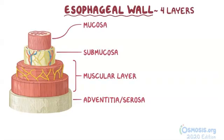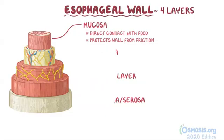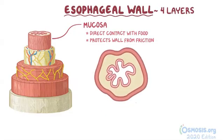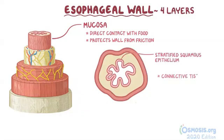The mucosa comes in direct contact with food, and it protects the esophageal wall from friction. The mucosa also has three layers of its own: a layer made of stratified squamous epithelium, a layer of connective tissue called the lamina propria, and a layer of muscle cells called the muscularis mucosae.